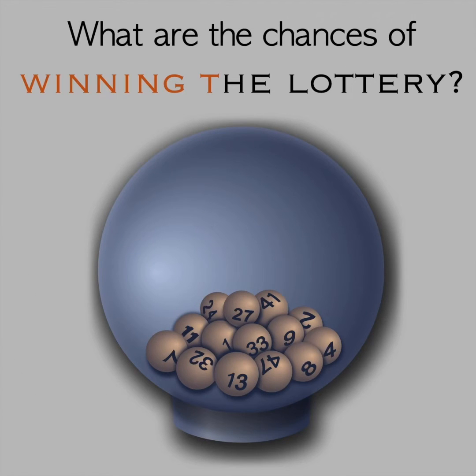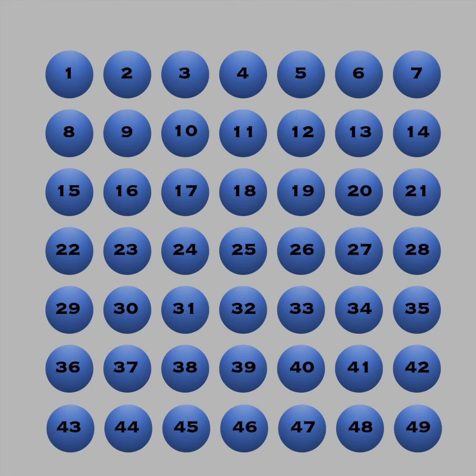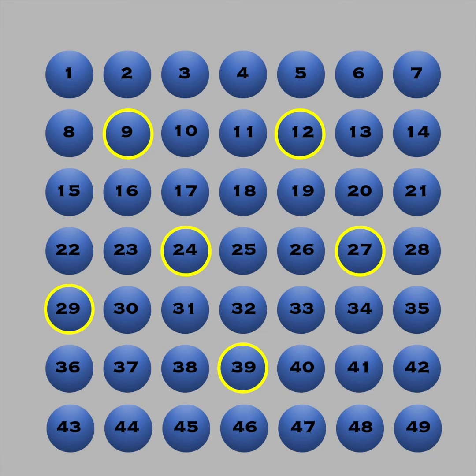When you buy a lottery ticket, what are your chances of winning the jackpot? In a standard lottery game, you choose six distinct numbers between 1 and 49.